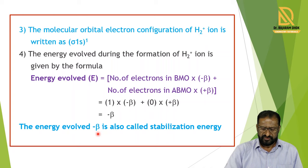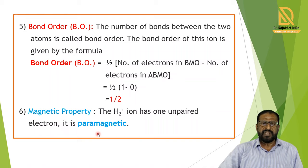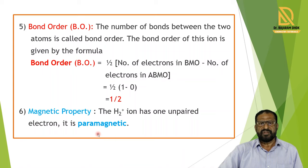Next we examine the bond order. Bond order means the number of bonds between two atoms. The formula is: bond order equals one half times (number of electrons in bonding molecular orbital minus number of electrons in antibonding molecular orbital). In the diagram, one electron is in the bonding molecular orbital and zero electrons are in the antibonding molecular orbital. So bond order equals one half times (1 minus 0), which gives one half.